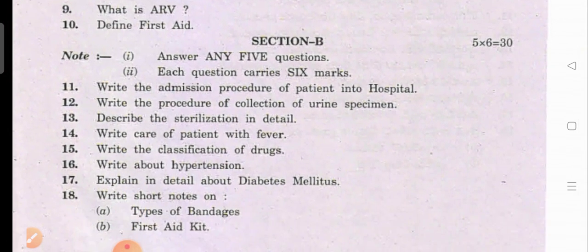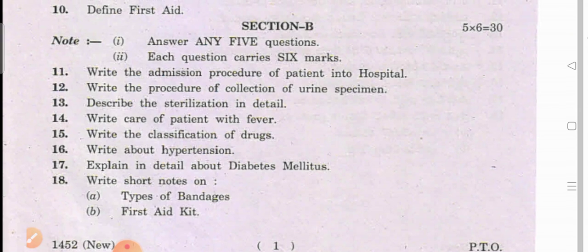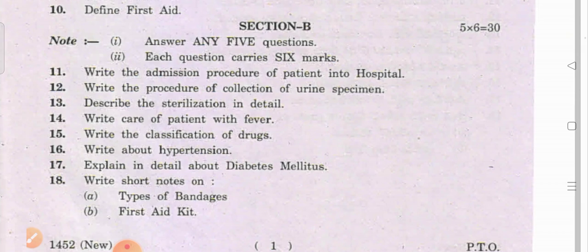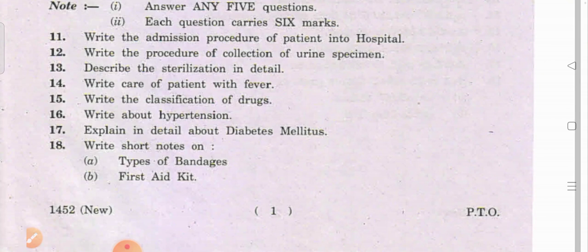Next, Section B questions. Question one: Write the admission procedure of a patient into hospital — this is from the first unit, admission and discharge of a patient. Question two: Write the procedure for collection of a urine specimen — this comes from the third unit, specimen collection. Question three: Describe sterilization in detail — this is the fourth unit, first subtopic.